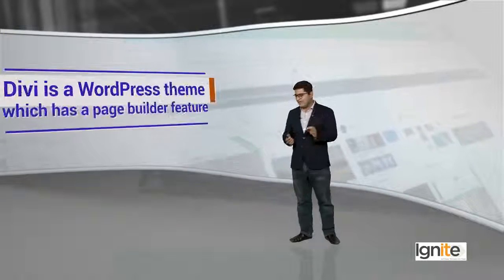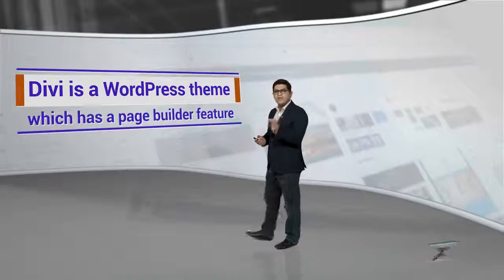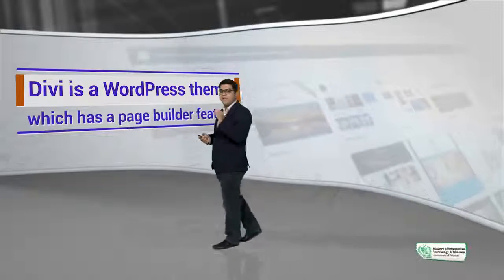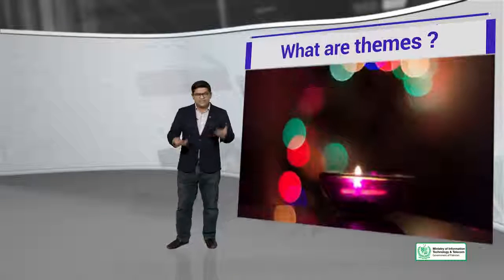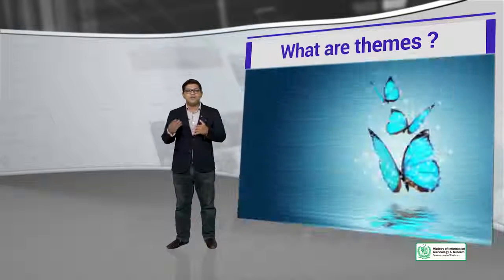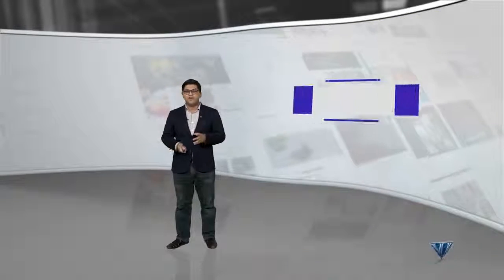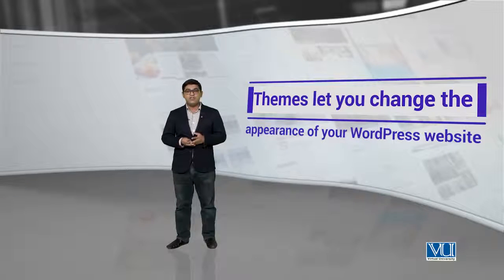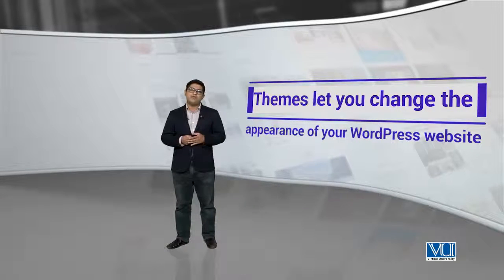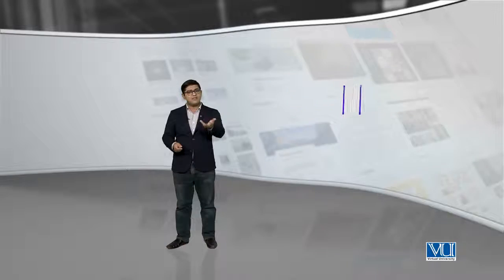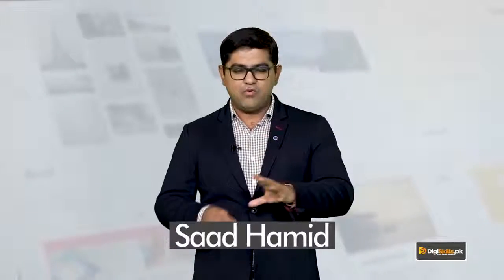Divi is a WordPress theme which has a page builder. Let's do a quick recap to understand themes and their function. Themes let you change the appearance of your WordPress website. These are simple themes which you can use to transform your website for your users, and the content remains the same.